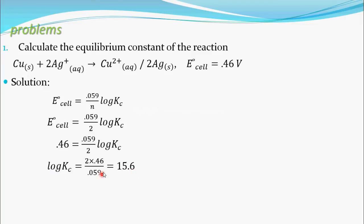Now, take this log to this side because you want the Kc value. So, Kc equals antilog of this 15.6. Antilog of this number is 3.92 into 10 to the power 50. This is the value of Kc, that is equilibrium constant.